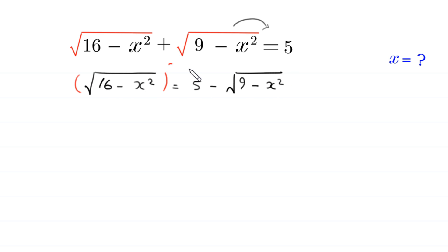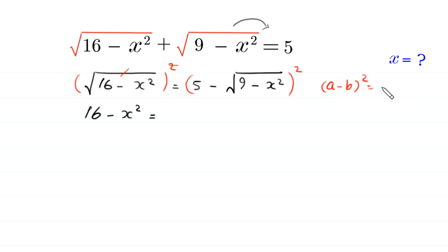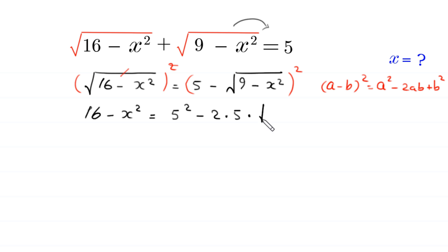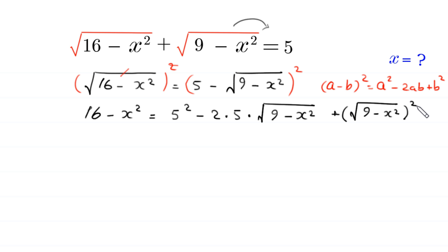Now we take the square of both sides, so the left side's square root is cancelled. At the left hand side we are left with 16 minus x squared. On the right hand side, we use the algebraic identity (a minus b) whole squared equals a squared minus 2ab plus b squared, giving us 5 squared minus 2 times 5 times square root of (9 minus x squared).